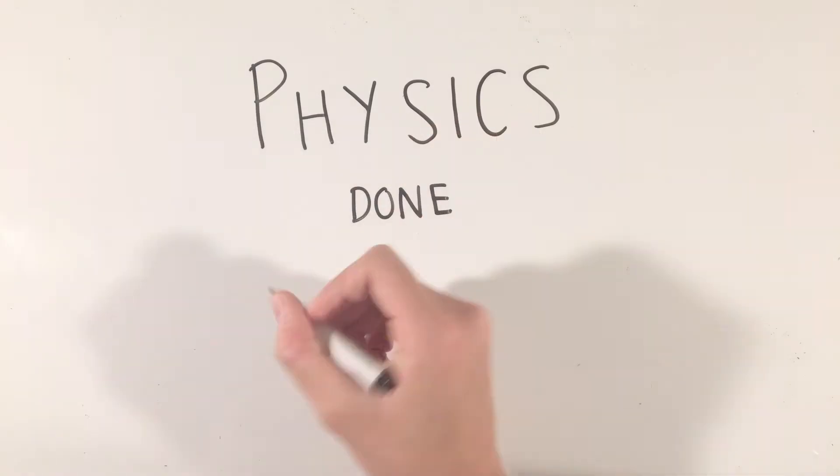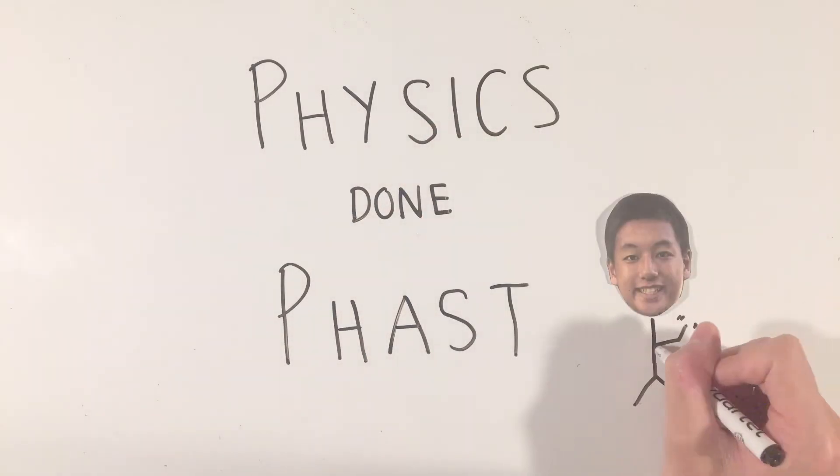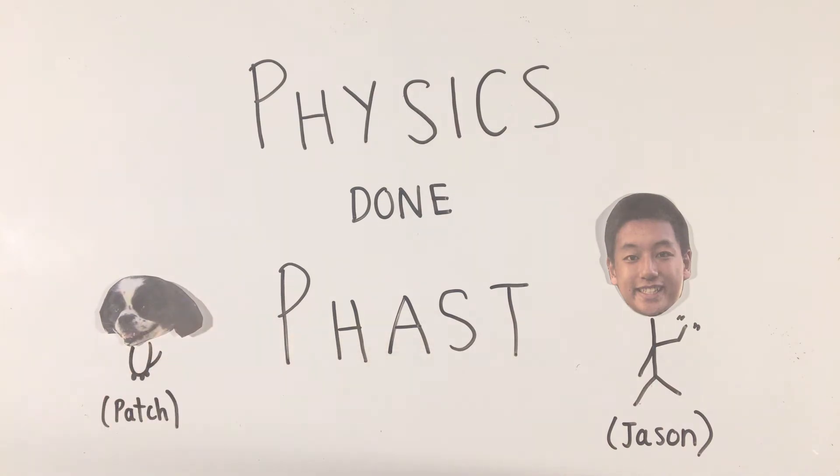While we've hopefully learned the basic definitions of position, velocity, and acceleration, how are these quantities related to each other?